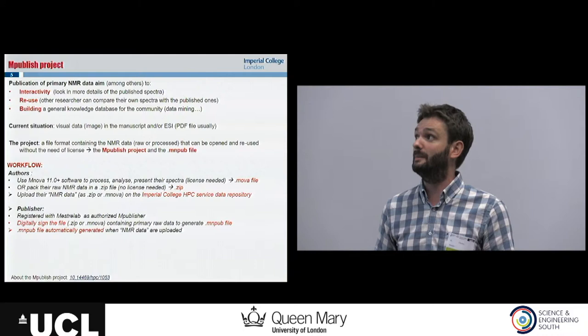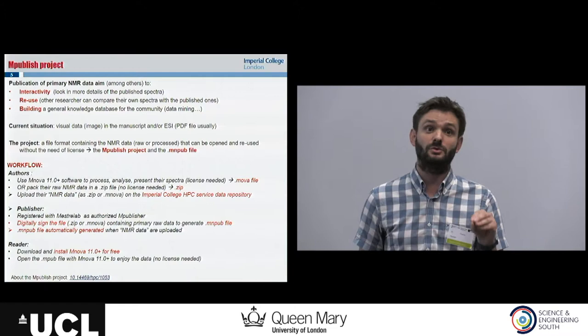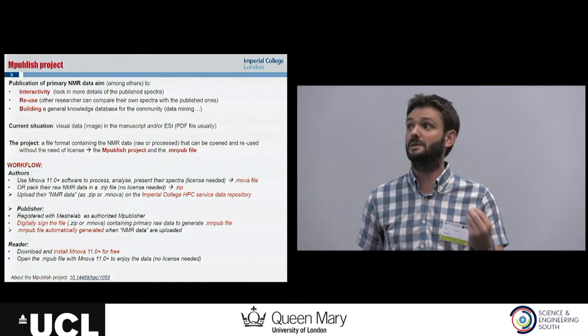It's automatically generated along with SaviData. As a reader, if you want to read the file, you can download the software for free. You just need a license to open specific types of data. In the case of the MNPUB file, you don't need any license — it's in the file — and any reader can enjoy the data.